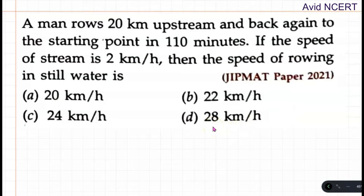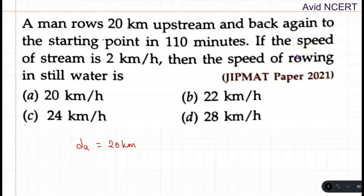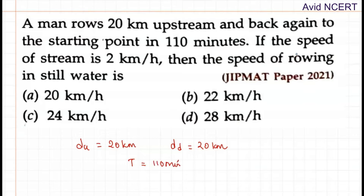From the first sentence, the data we have: the man rows 20 kilometers upstream, so the distance for upstream is 20 kilometers. And back again to the starting point, which is downstream, so the distance downstream is also 20 kilometers. The total time taken is 110 minutes. Since distances are in kilometers per hour, we convert 110 minutes into hours: 110 divided by 60, which equals 11/6 hours.